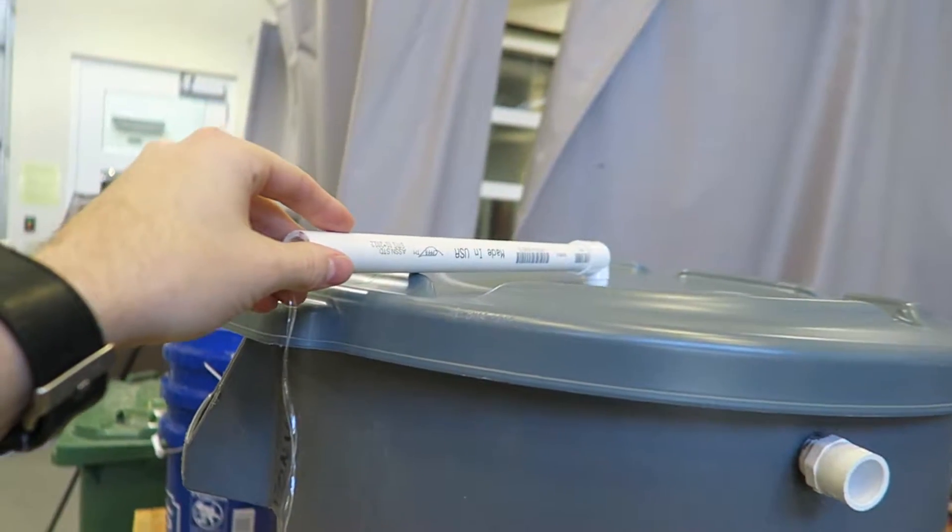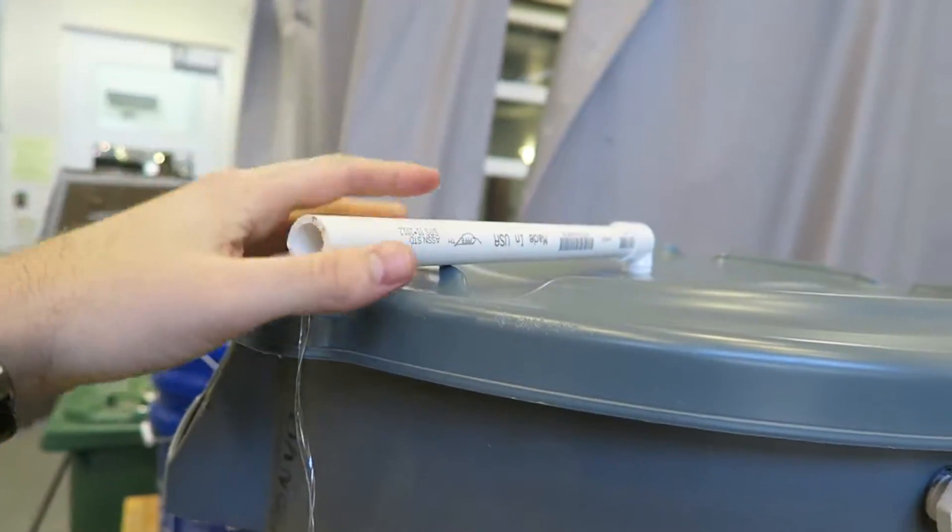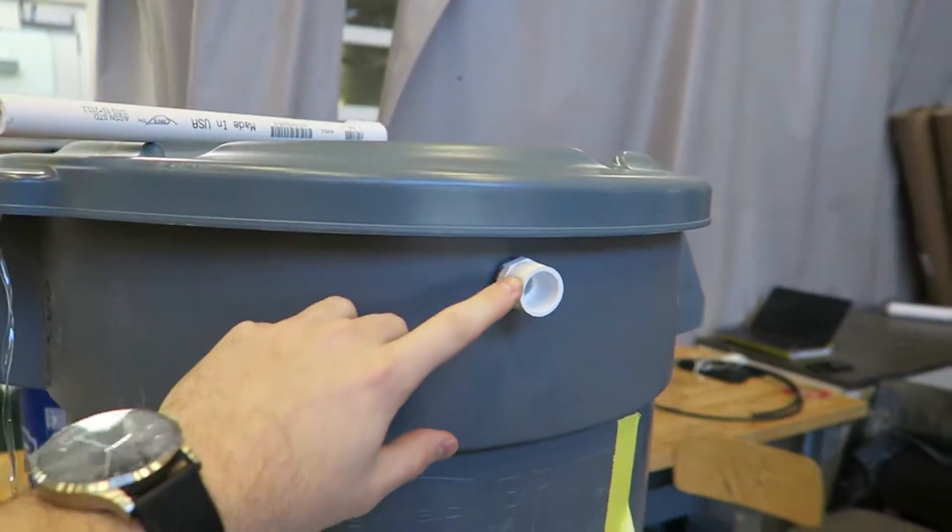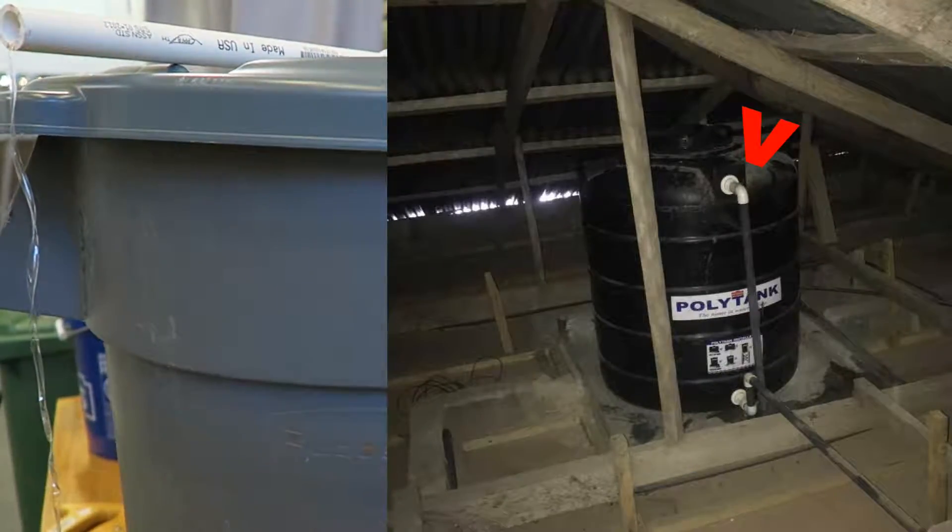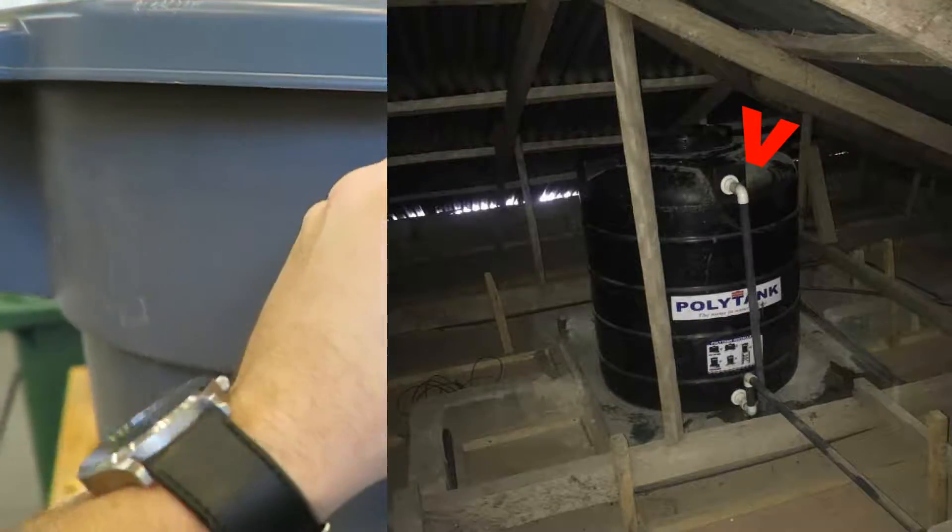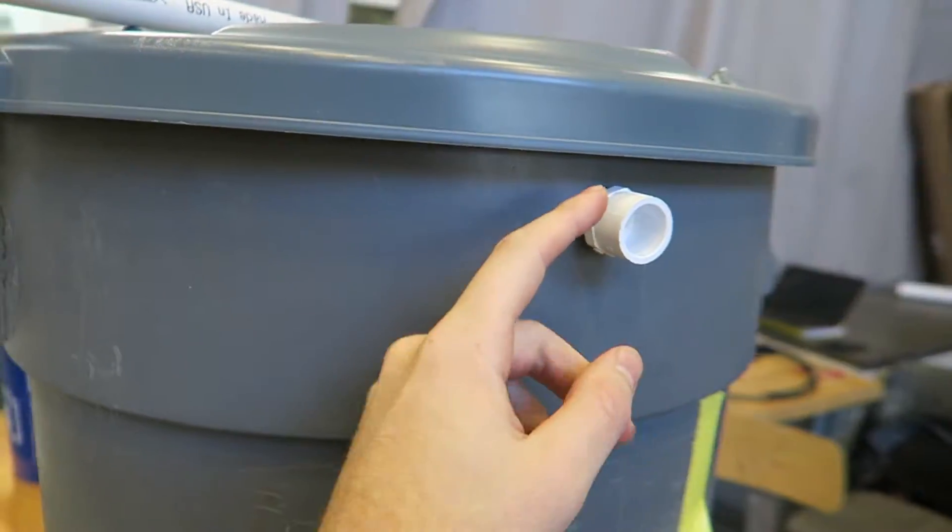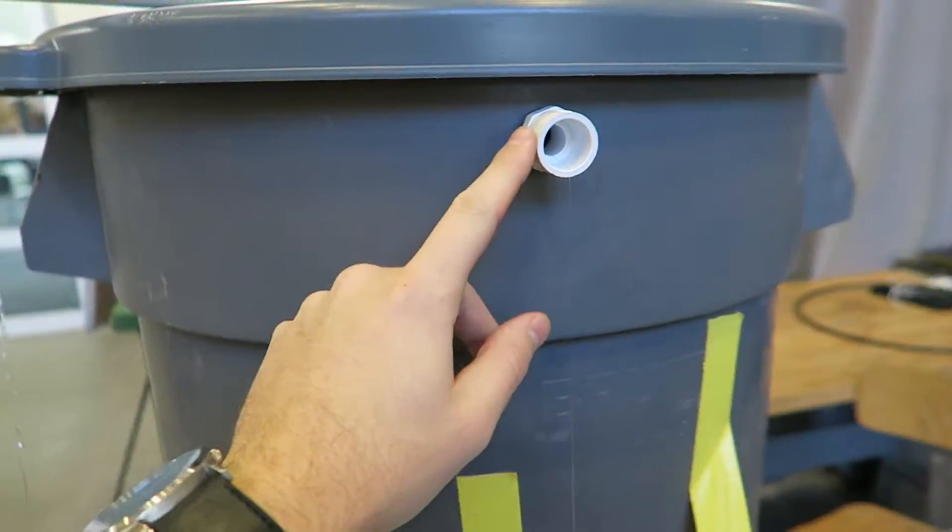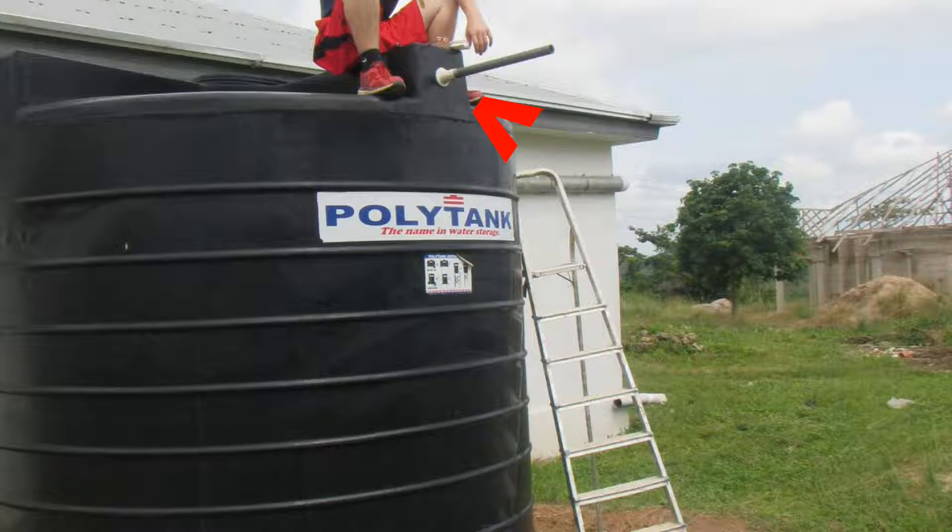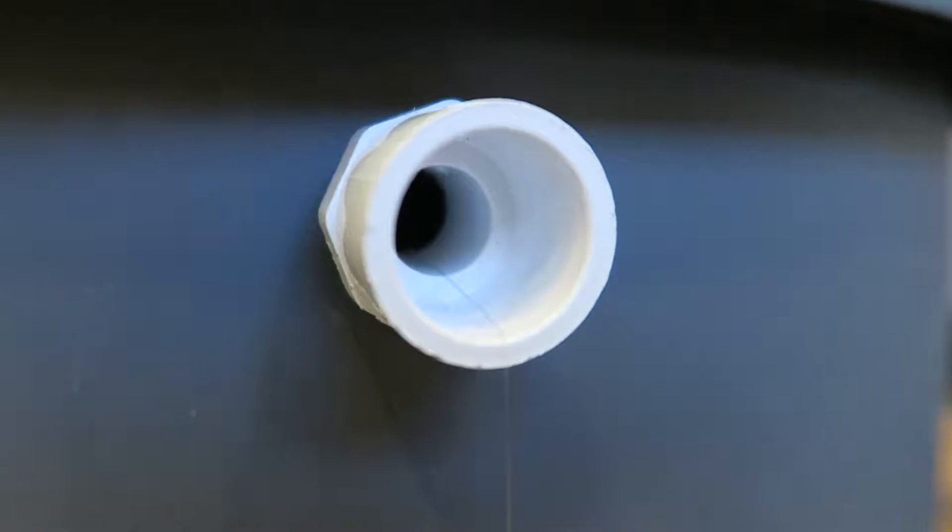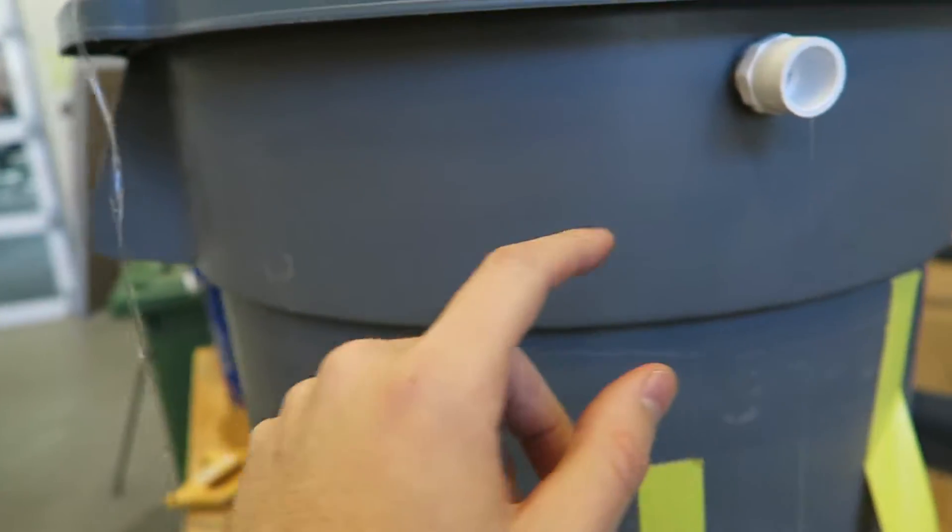The one you're seeing on top is used in attics where they are already using this overflow valve to prevent overflow from being in their attic. This is our replication of the overflow valve that already exists in the tanks in Ghana, and as you can see, we're just running our fishing line through this overflow valve.